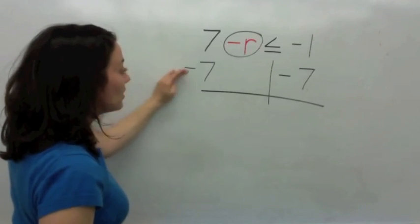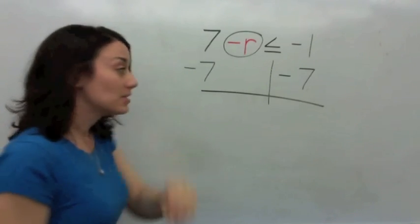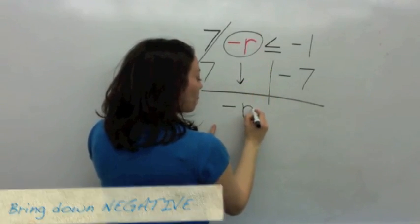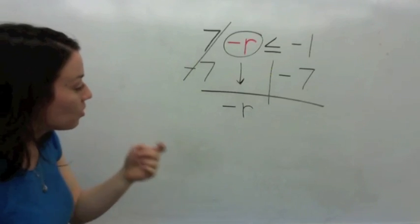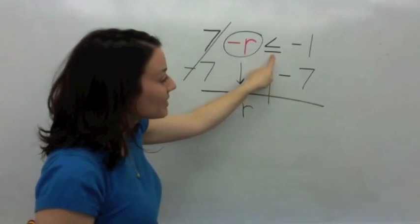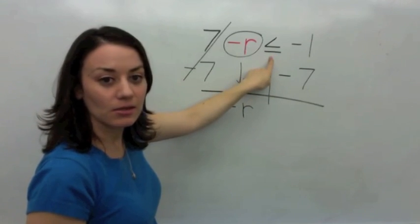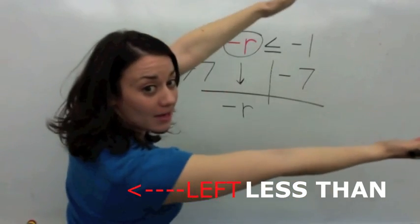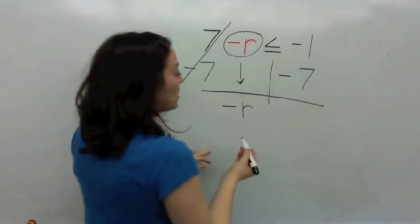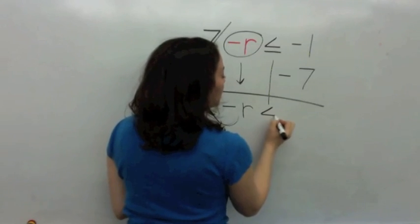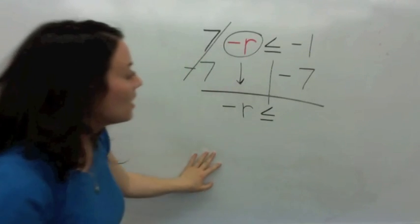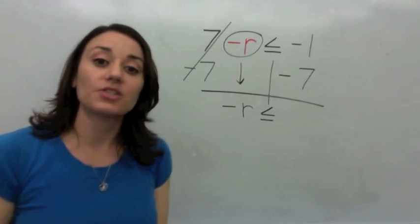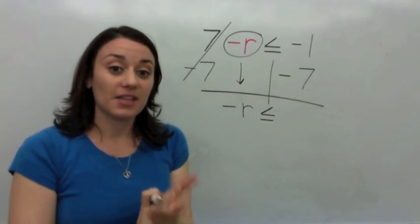So you have 7, take away 7, that's 0. Bring down the negative r. This inequality is going to say... what sign is this? What does this inequality say? Less than — left. Very good. So it says negative r is less than or equal to... We have negative 1 and negative 7. So are they the same signs or different signs? Same signs — add and keep.